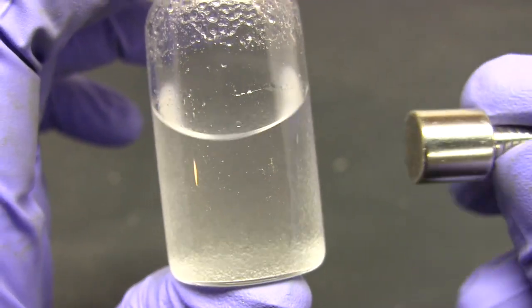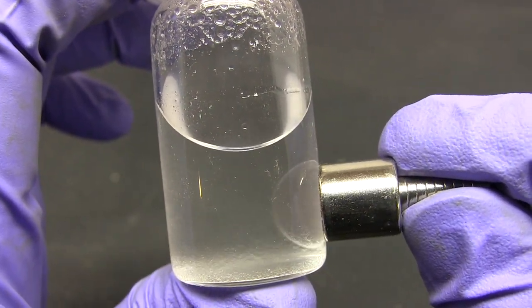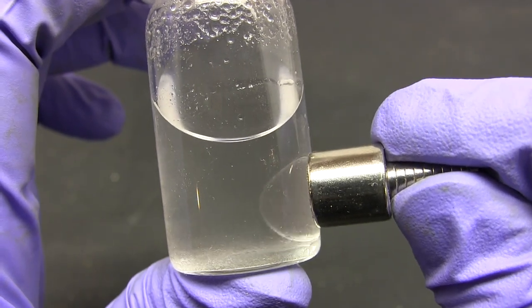If you give it a hard shake the drop breaks up into lots of tiny droplets. Applying the magnet, the droplets pull toward it and coalesce back into the larger drop.